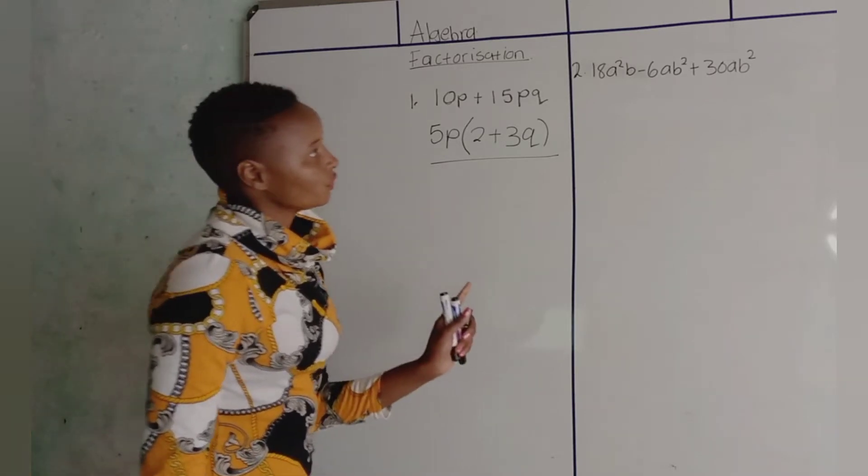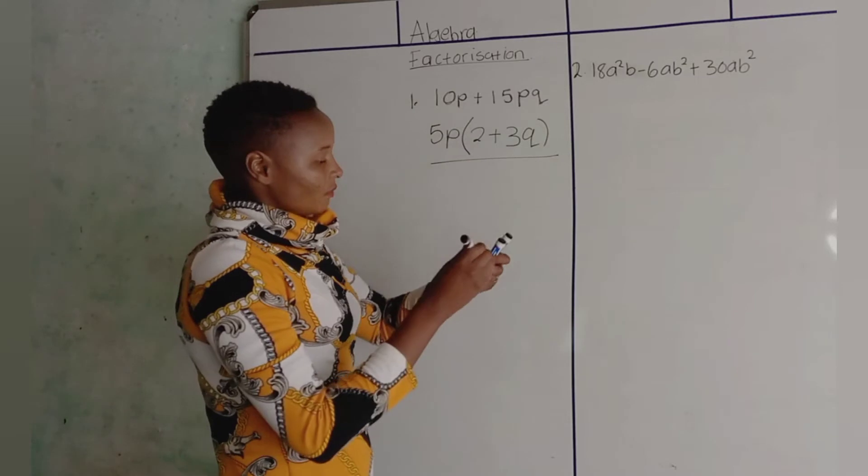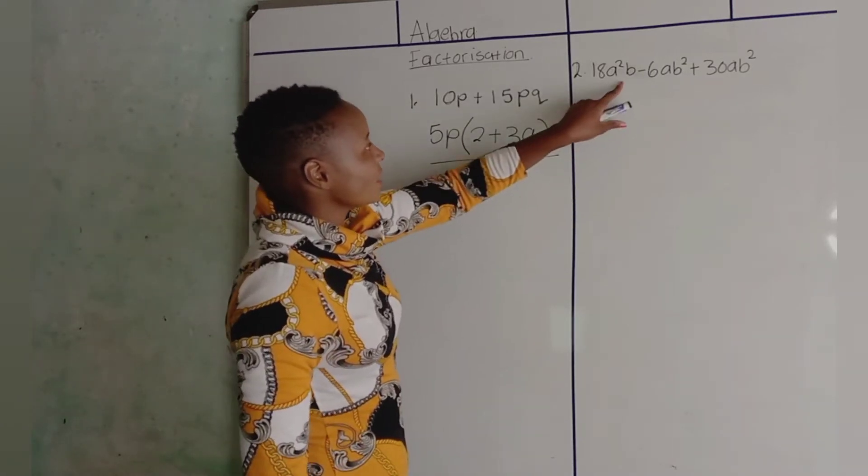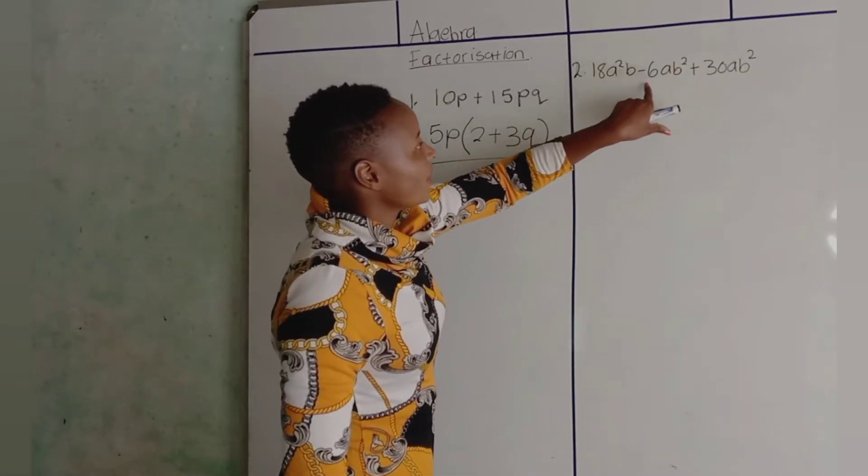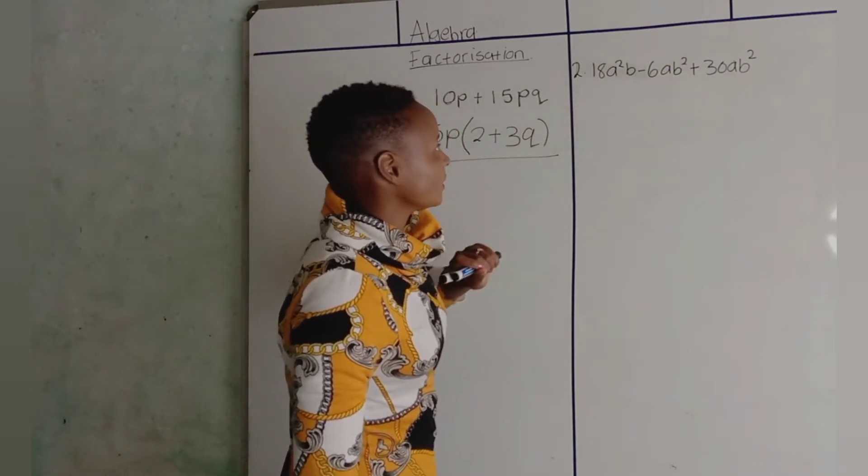And then, number 2. Number 2: 18A squared B, minus 6A squared, minus 6AB squared, plus 30AB.